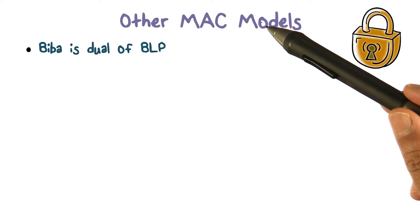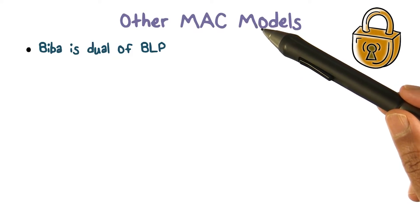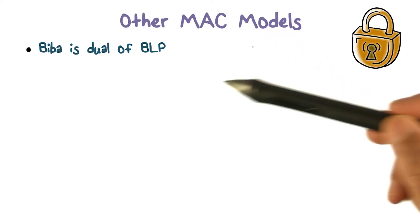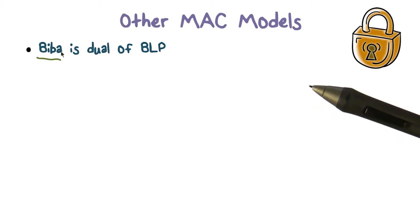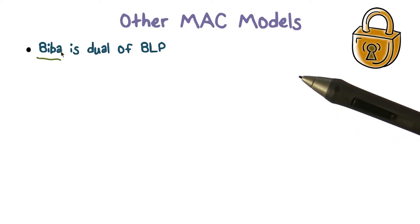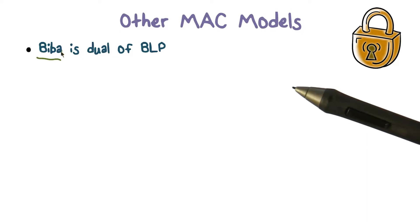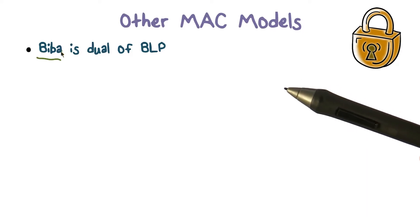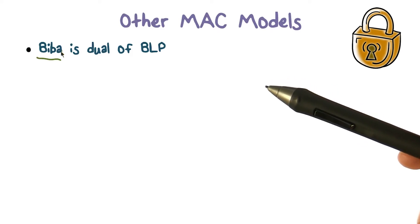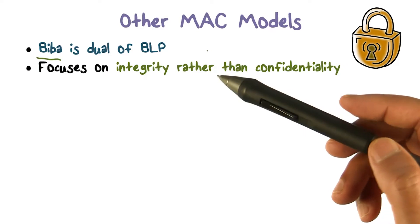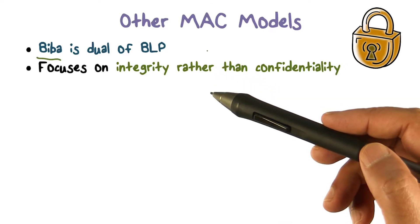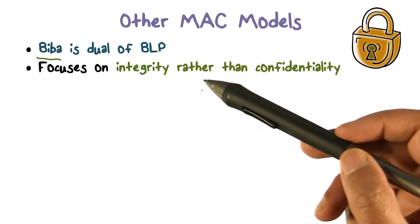We've been talking about MAC models and BLP. Bell-LaPadula is one example of that. That's the Biba model. Anytime you talk about a model, you have to say: what's the nature of the labels, how do you compare them, and what kind of rules do you have — similar to what we had in the BLP model. The Biba model is actually the dual of the BLP model, and this duality is because rather than focusing on confidentiality, which is what BLP focuses on, Biba focuses on integrity.